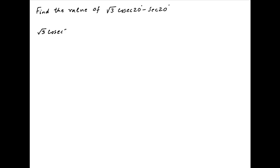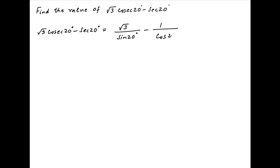The given expression is root 3 times cosec 20 degrees minus sec of 20 degrees. This can be written as root 3 upon sin of 20 degrees minus 1 upon cos of 20 degrees.